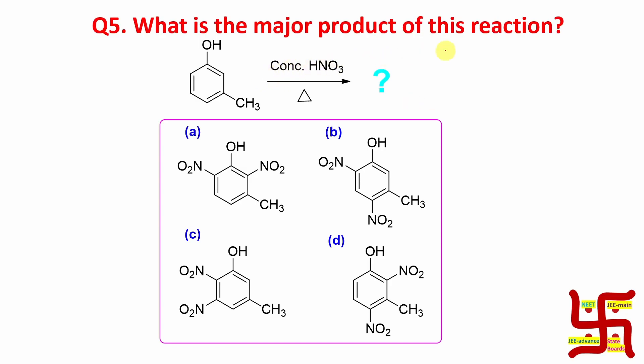The question is: What is the major product of this reaction? This is actually paramethyl phenol, or you can say m-cresol. So this compound is m-cresol. Now the question is: it is treated with concentrated nitric acid and heating. What is the product?